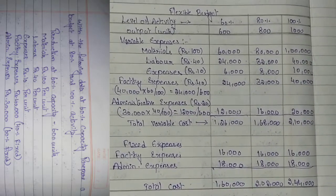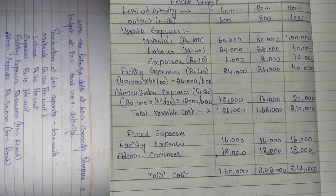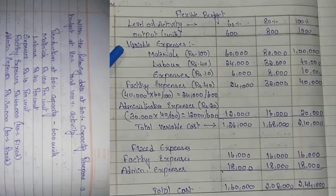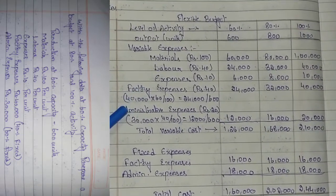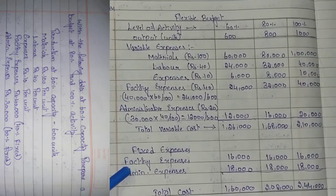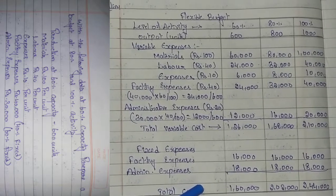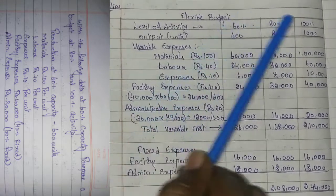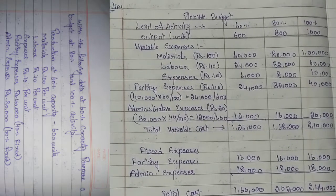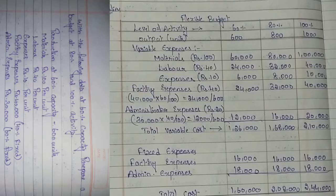This is how we prepare the flexible budget: first record all variable expenses, then add the fixed expenses to get the total cost for each budgeted activity level. We have calculated the total cost for three levels of activity — 60%, 80%, and 100%. This is the complete procedure for preparing a flexible budget.